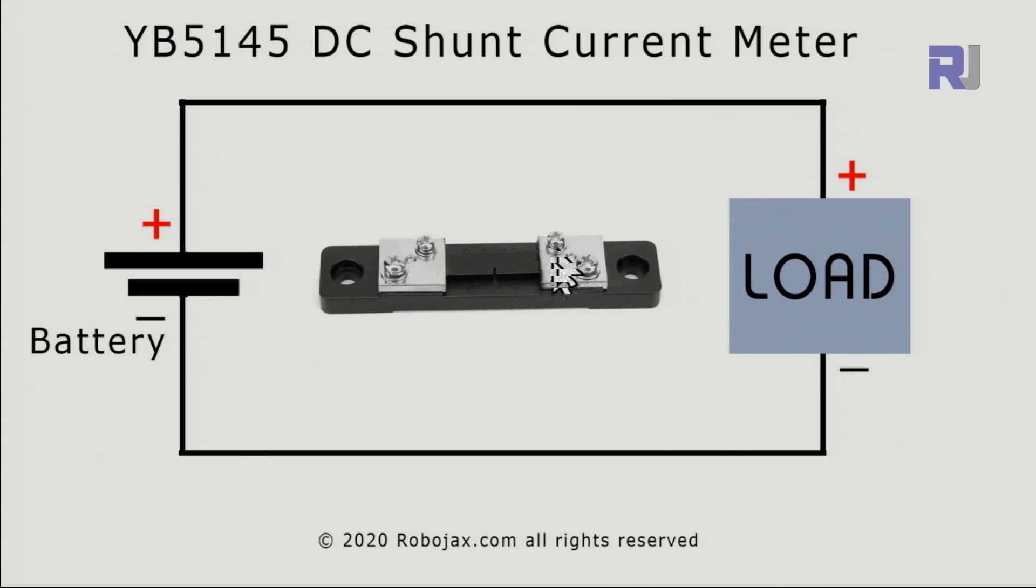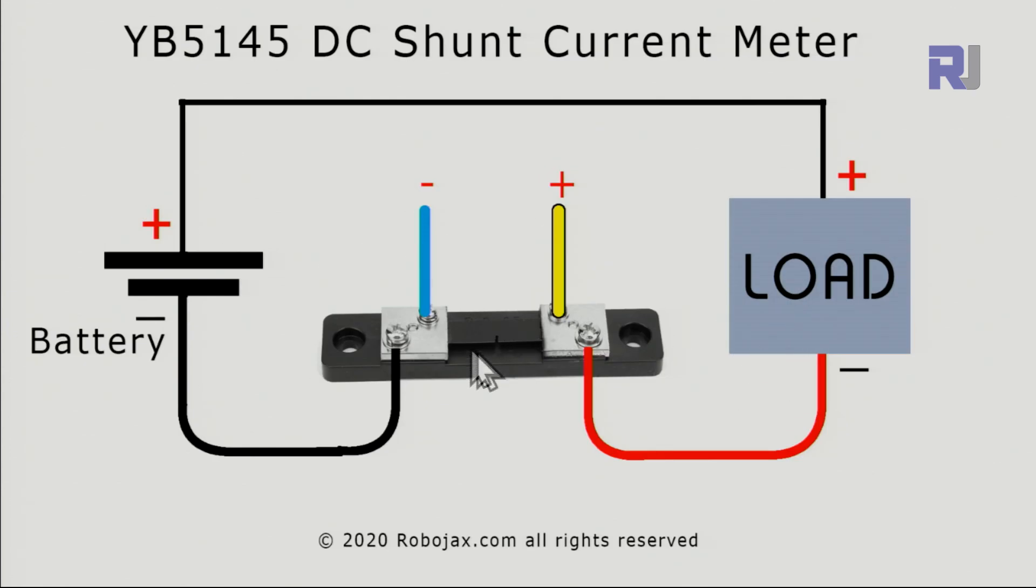Let me now explain the wiring. This is your shunt resistor. We have a meter, you have a battery and you have a load. This is without measuring the current - you will connect it like that. But to measure the current you will put a shunt resistor in series with the load. The negative comes and passes through this shunt resistor and we have a voltage that appears proportional to the current where we can measure it using these two blue and yellow wires connected to the meter.